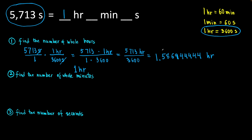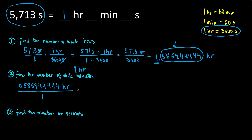Now, we are going to take this tail, 0.586944444, and change it into minutes, because we have 1 whole hour and this fraction of an hour we are going to change into minutes. Next step: finding the number of whole minutes. Write that tail, 0.586944444 hours, over 1 and prepare to multiply. We are going to use this conversion factor: 1 hour is equal to 60 minutes. We will set it up so our hours cancel out and we are left with minutes.